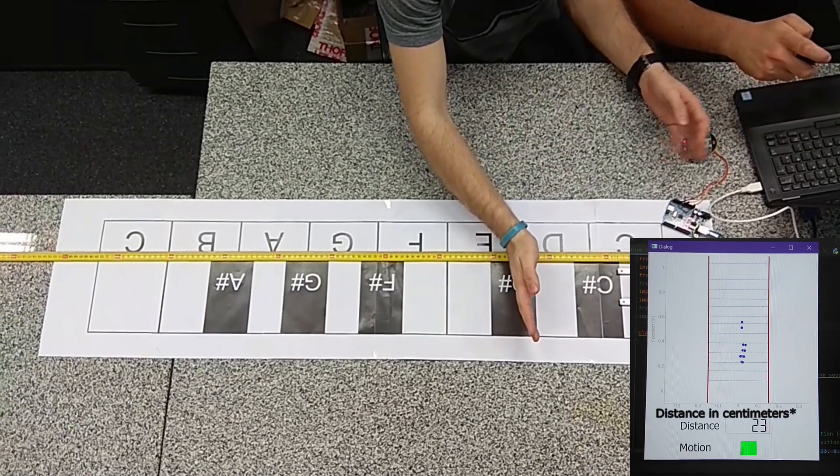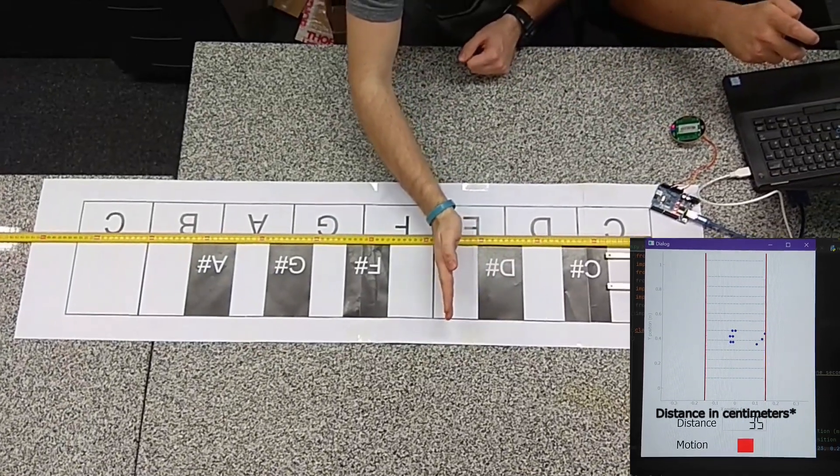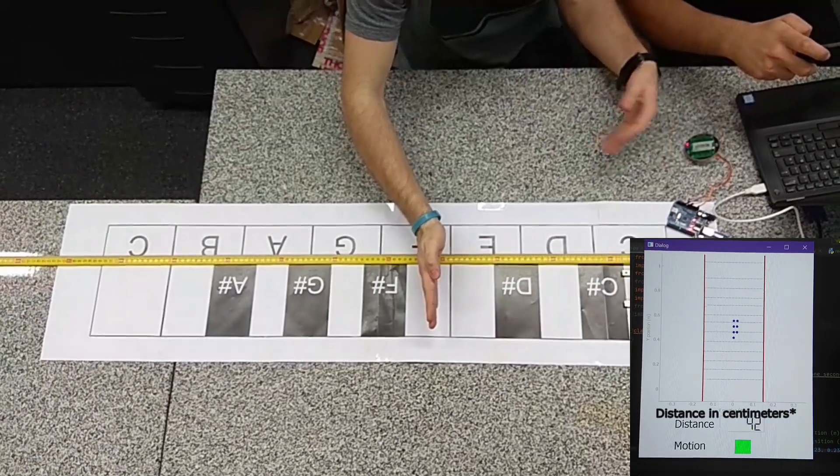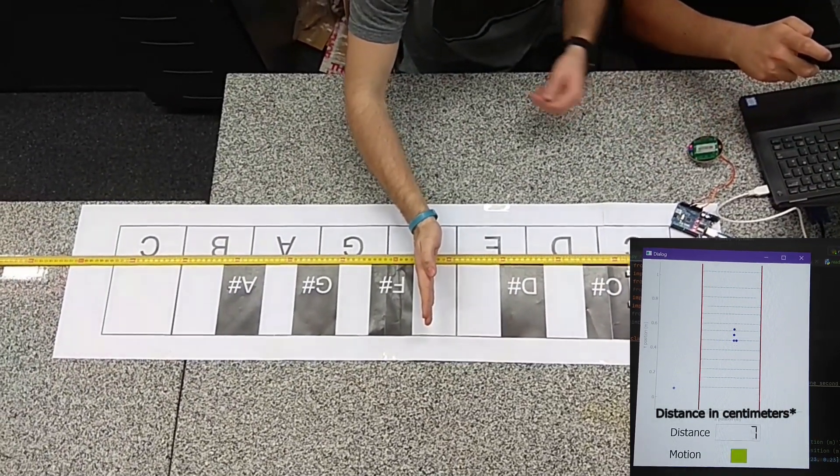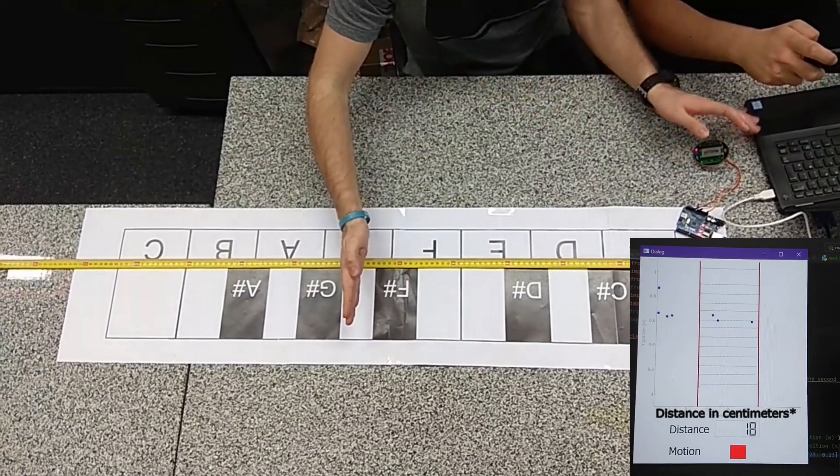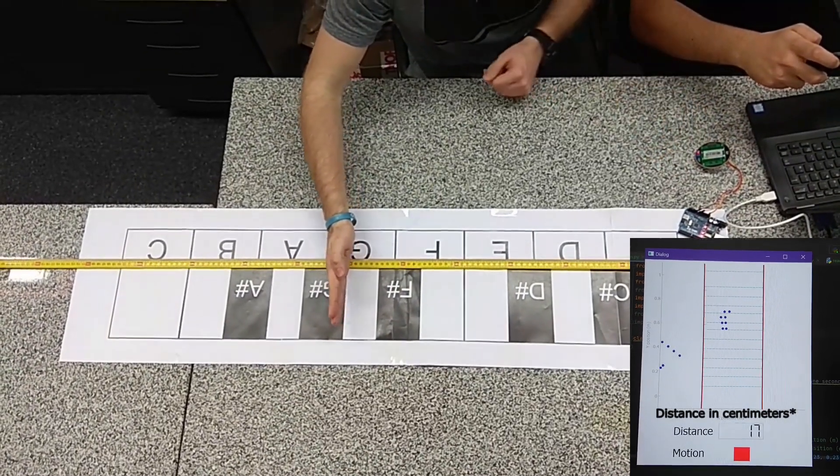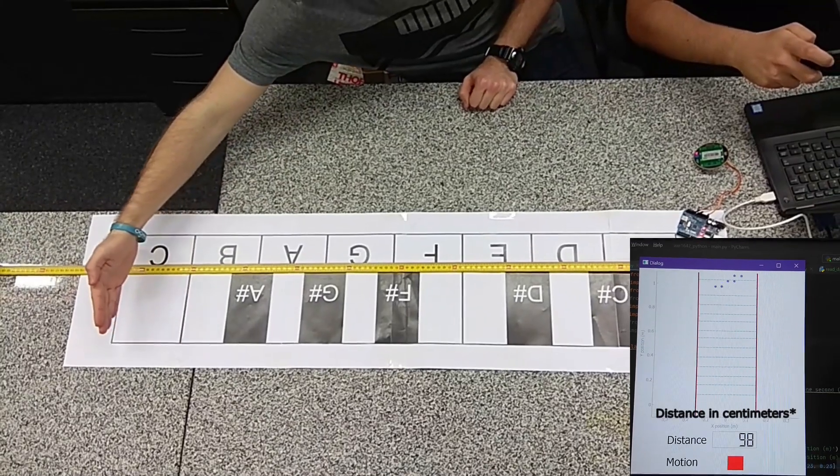Whenever the Doppler radar detects a motion, the motion box in the user interface lights up green and the sound is generated. From the AWR module you can read the position of the right hand which determines the tone of generated sound. You can also see that the maximum distance is about 1 meter.